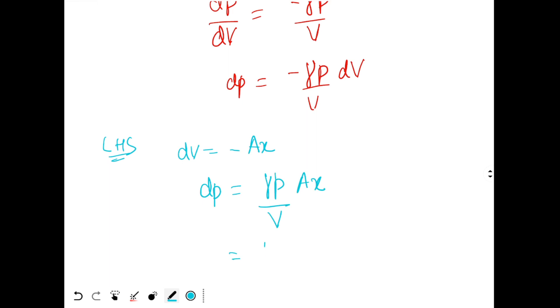Same thing if we apply on the right hand side, we will get again DP same value. Now put gamma equal to 5 by 3. So 5 by 3 P. And volume is what? Volume will be A into L by 2, initial volume is L by 2, times AX. So this is equal to 10 P X by 3 L. This is your change in pressure DP.